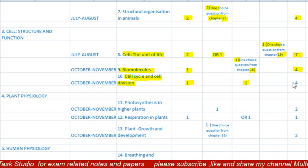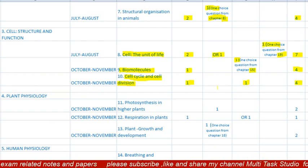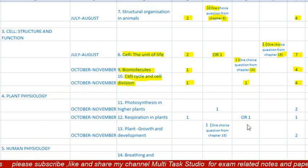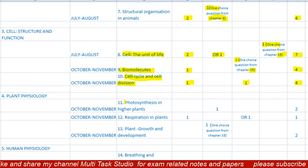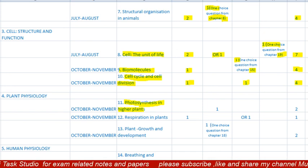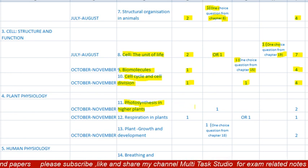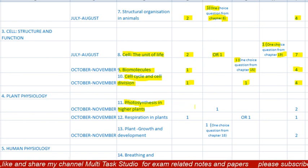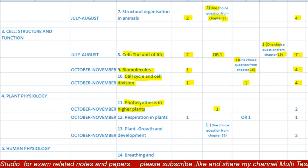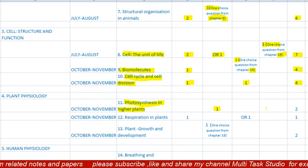Unit 4 is 'Plant Physiology.' The eleventh lesson is 'Photosynthesis in Higher Plants,' October/November syllabus. There will be no one-mark question from this lesson, but there will be one question of two marks. Total paper from this lesson is two marks.